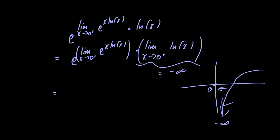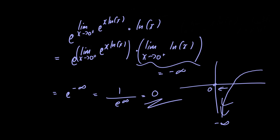Anything multiplied by negative infinity is just negative infinity, so we have e raised to negative infinity. That's equal to one over e raised to infinity, which is zero. And that's the answer to the problem. Thank you very much for watching, I hope you found the video useful.